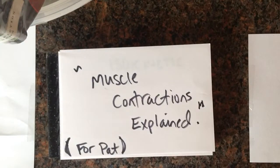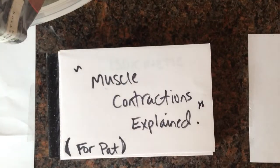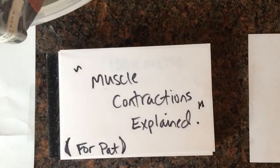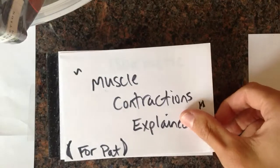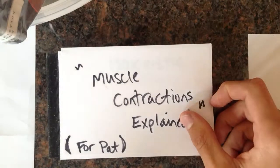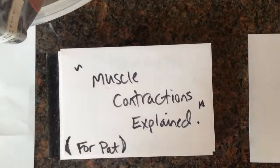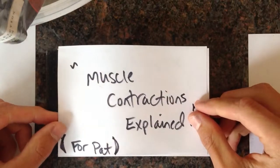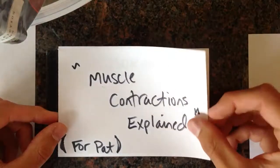I'm going to take a break — and Dr. Seuss said that nonsense wakes up the brain — and do a favor for a friend: muscle contractions explained. This is for all you ladies out there who maybe aren't Arnold Schwarzenegger and don't really understand the gym and the whole eccentric, concentric thing. Hopefully I can get this across in less than two and a half minutes.